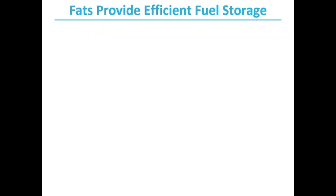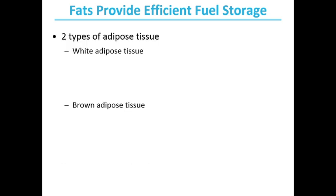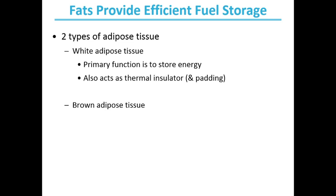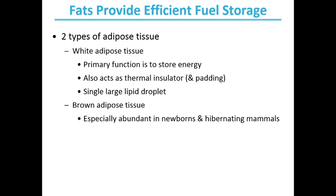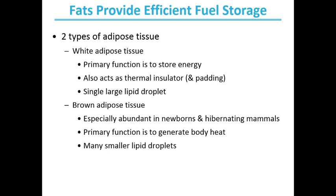There are two types of adipose tissues: white adipose tissue and brown adipose tissue. White adipose tissue's primary function is to store energy; it also acts as a thermal insulator and padding, and has a single large lipid droplet. Brown adipose tissue is especially abundant in newborns and hibernating animals such as bears; its primary function is to generate body heat. It has many smaller lipid droplets and a large number of mitochondria.